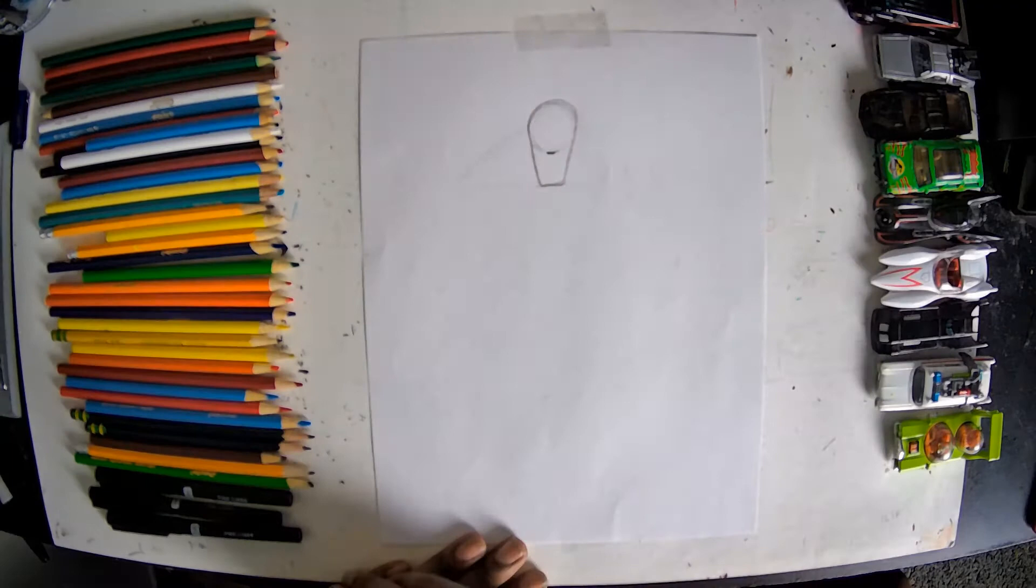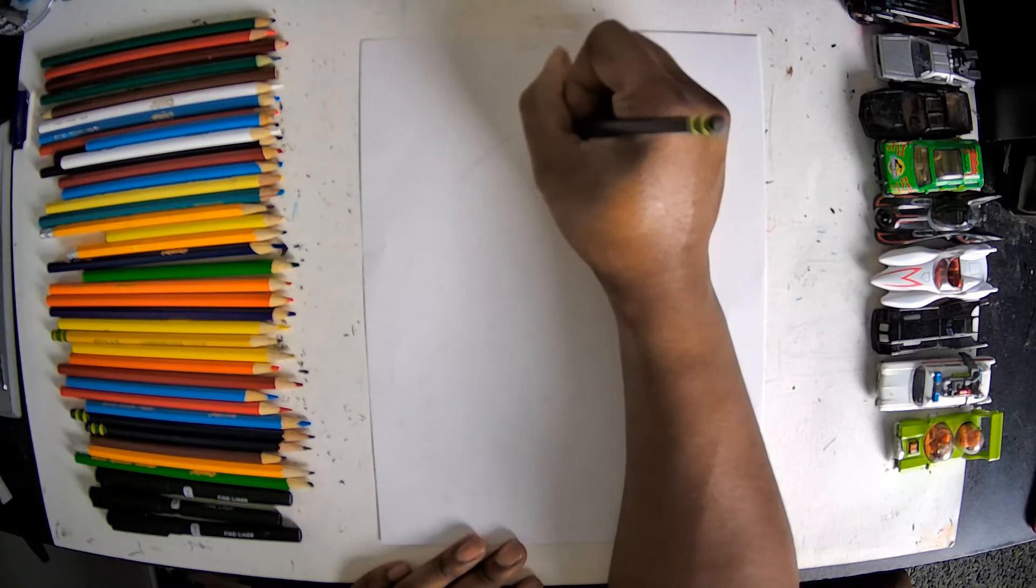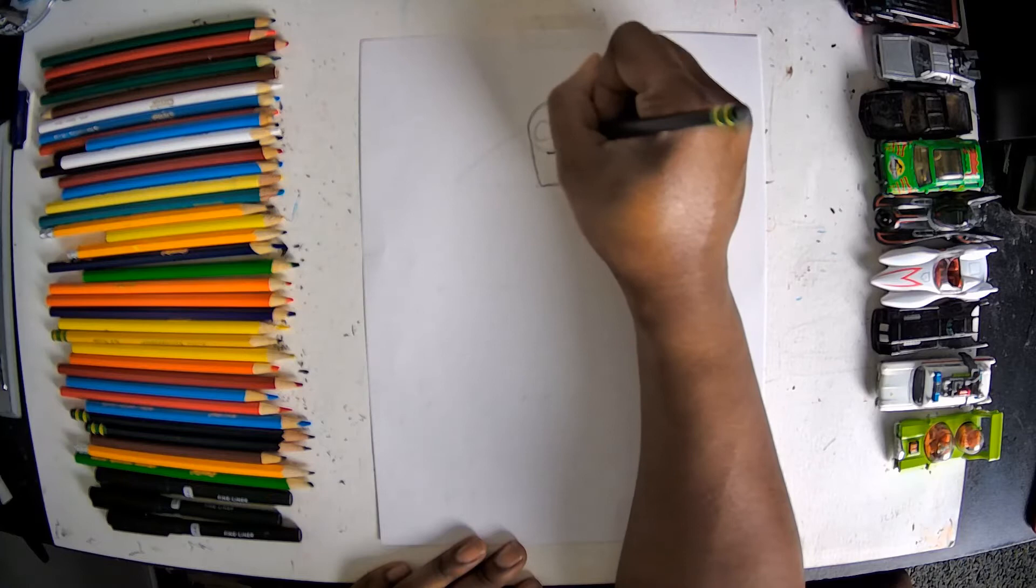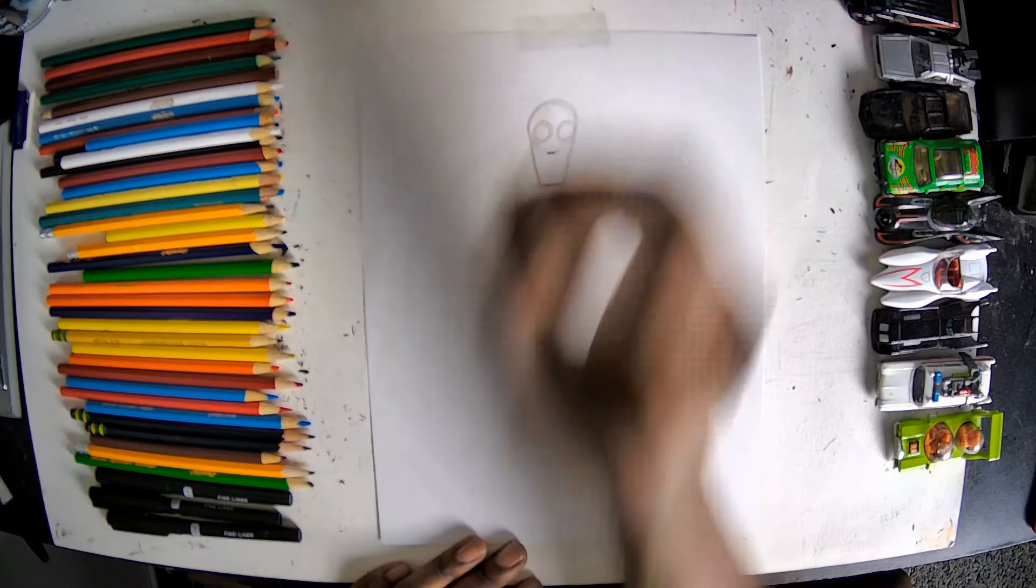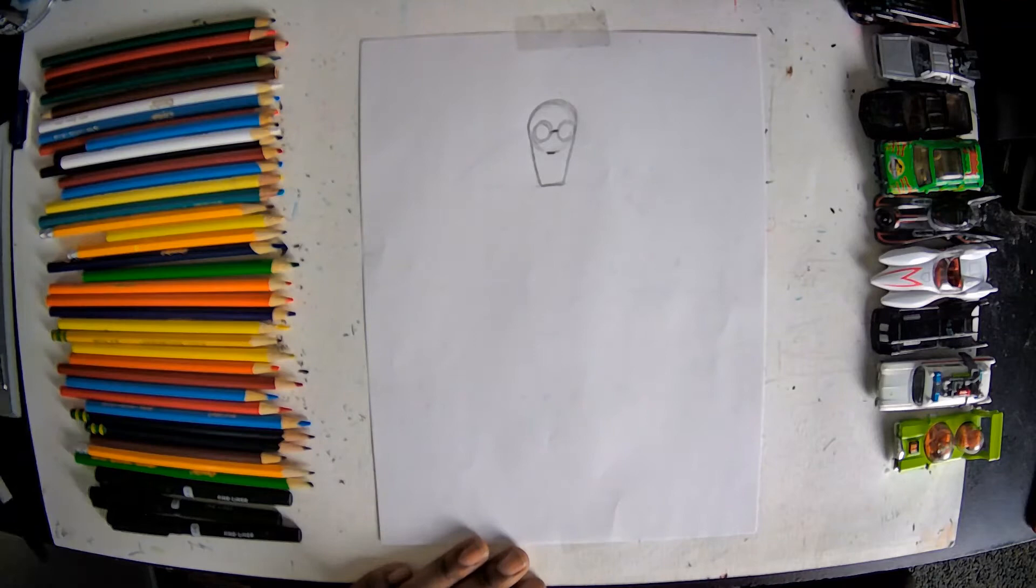Above that, we're gonna create his glasses. And we're gonna do that by creating two circles. And we want them to be big enough that they take up some good space, but there's some room in between that we can create a little bit of a bridge across his nose with the glasses.